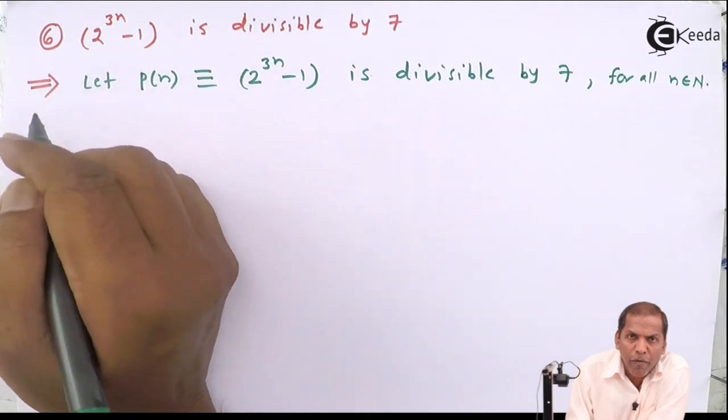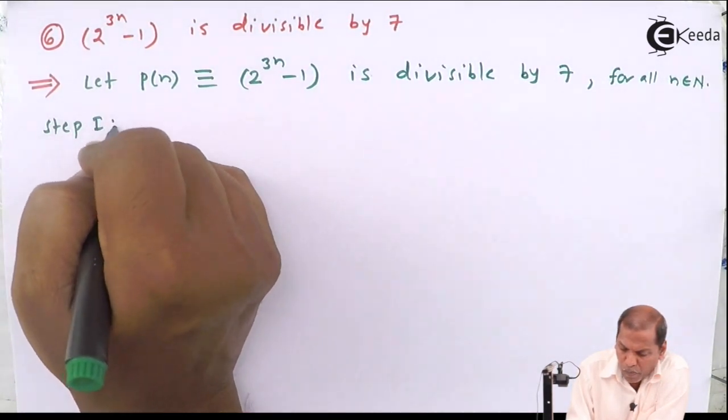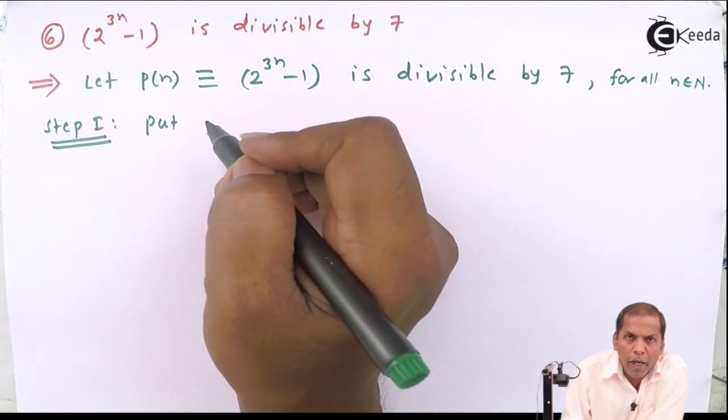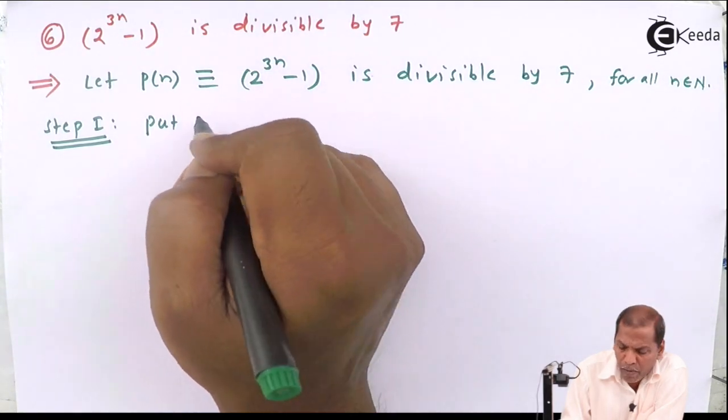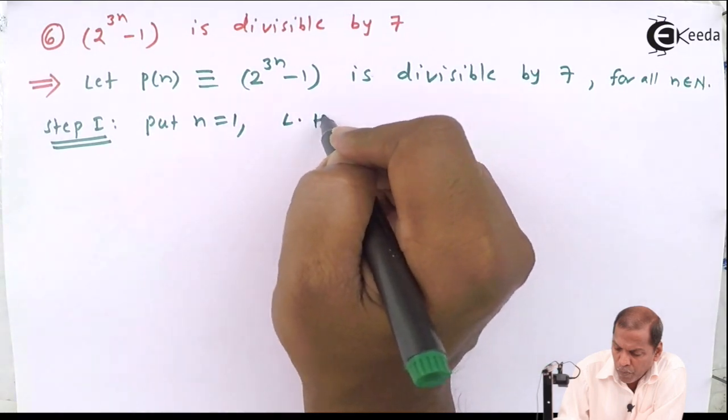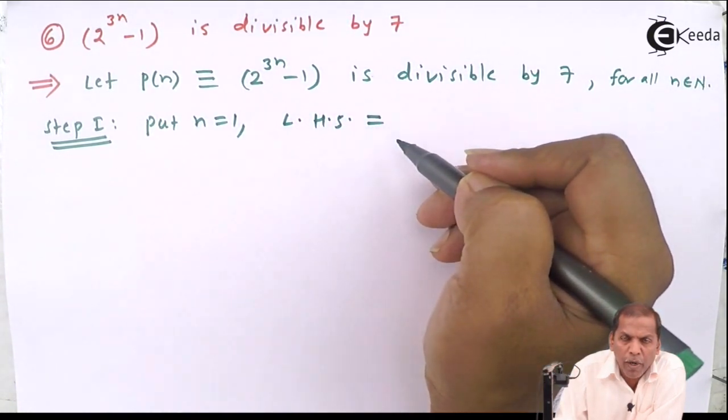Now step number 1. Put n equal to 1, we get LHS is equal to 2 raised to 3n minus 1.